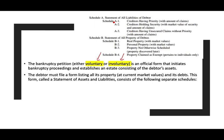Here is a schedule of the Statement of Assets and Liabilities. For example, Schedule A lists all liabilities: creditors having priority, creditors holding security, and creditors with unsecured claims — listed as A1, A2, A3. Schedule B covers real property with fair market value, personal property with fair market value, property not otherwise scheduled, property discovered later, and property claimed as exempt. Exempt property means it belongs to the individual — there is certain property the individual can keep by law.